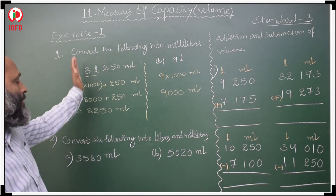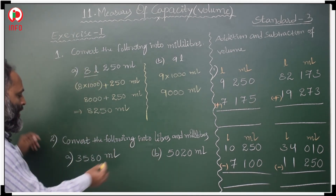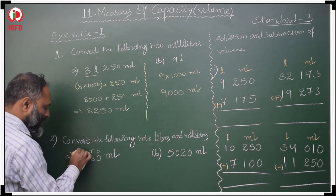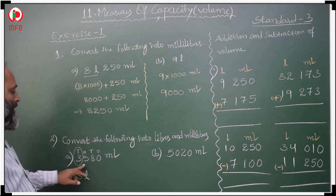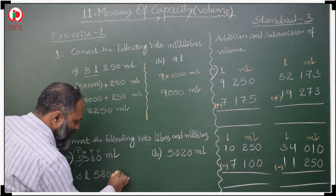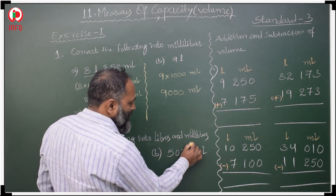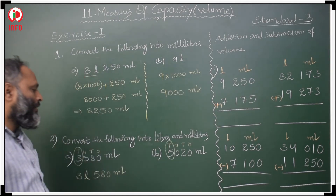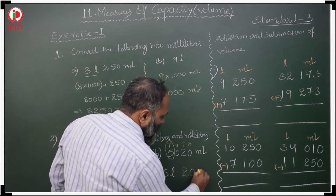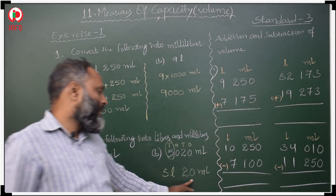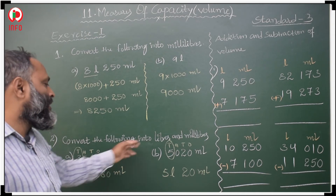Now converting milliliters into liters and milliliters. The 1000s place value becomes liters and the remaining digits become milliliters. For example, 3580 ml: 3 is in the 1000s place, so 3 liters and 580 milliliters. For 5020 ml: 5 liters and 20 milliliters.